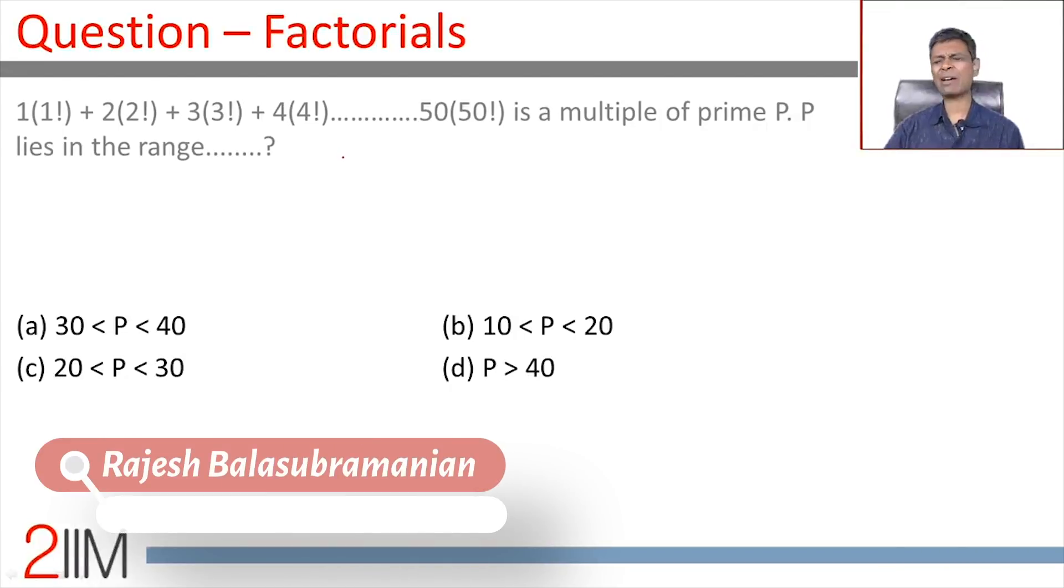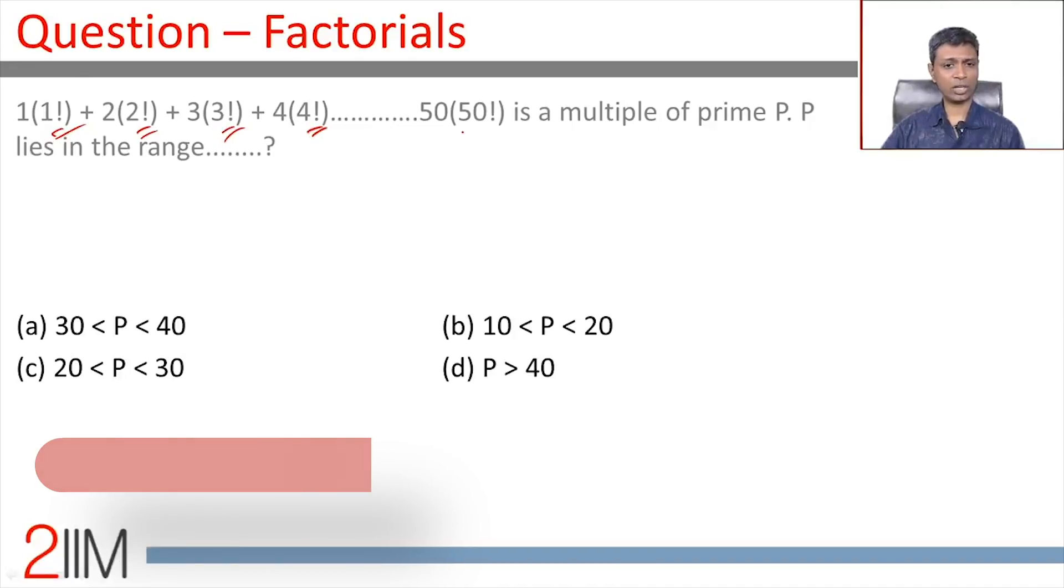Question on factorials, it's a fabulous question, one of my favorite questions, let's go over this. 1 into 1 factorial plus 2 into 2 factorial plus 3 into 3 factorial plus 4 into 4 factorial, all the way till 50 into 50 factorial, it's a multiple of prime p.